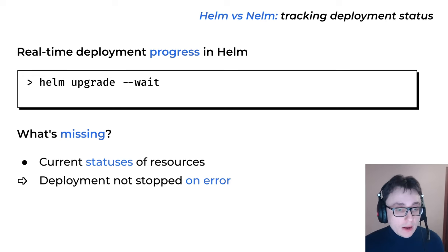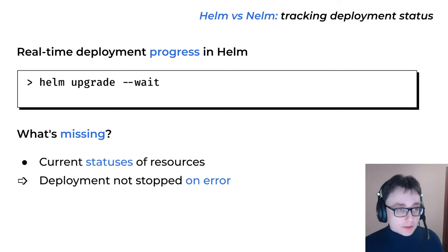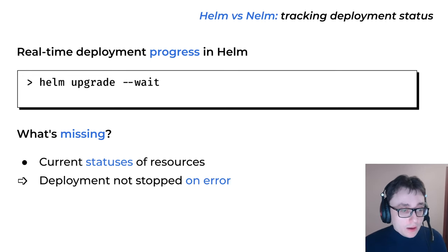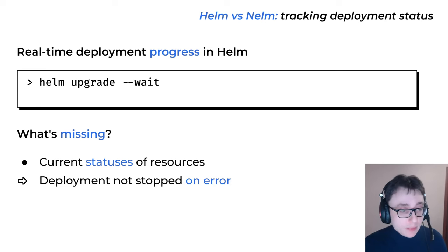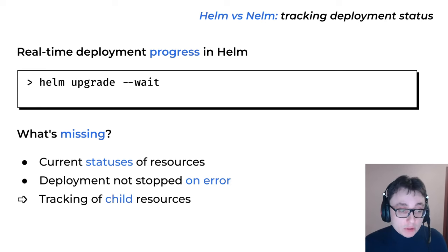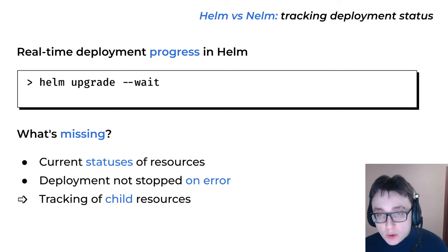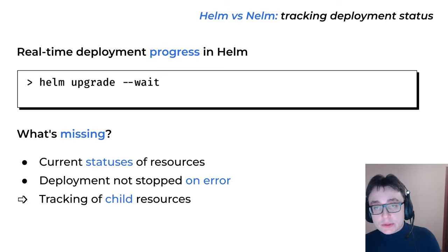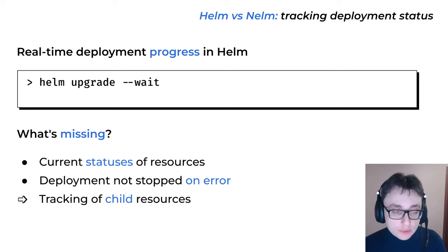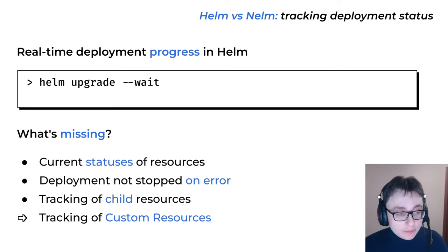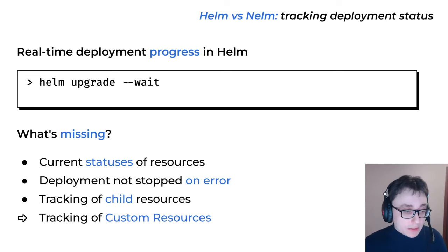It would be good if we could determine that the release failed earlier — for example, after 10 minutes — and then stop the release and run an automatic rollback as soon as possible. Also, Helm does not track child resources like pods of a deployment — it doesn't know how to find them, track them, or catch errors on them. And Helm does not know anything about custom resources and does not track them in any capacity.